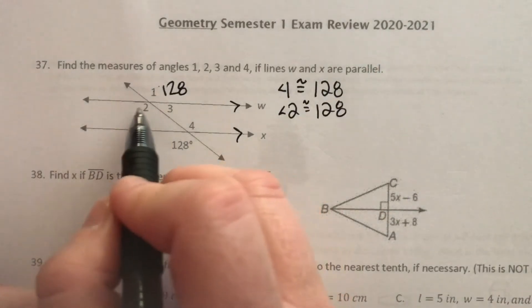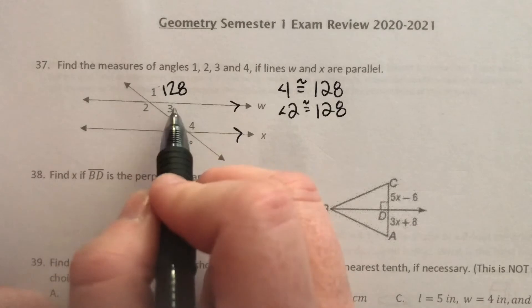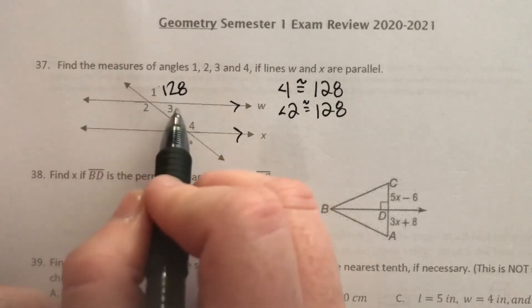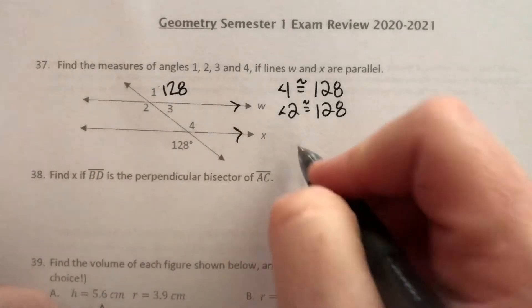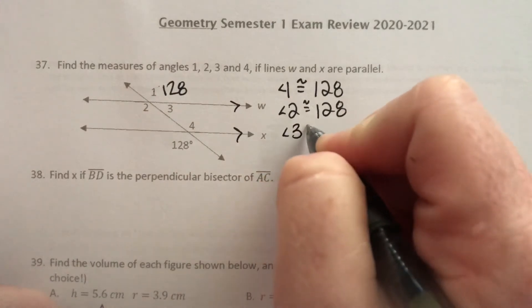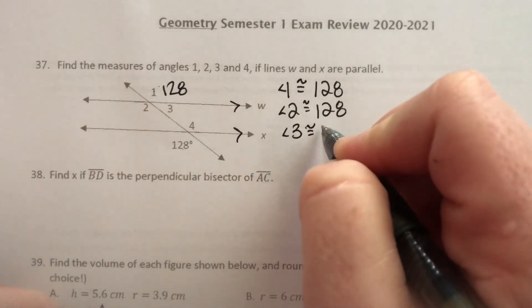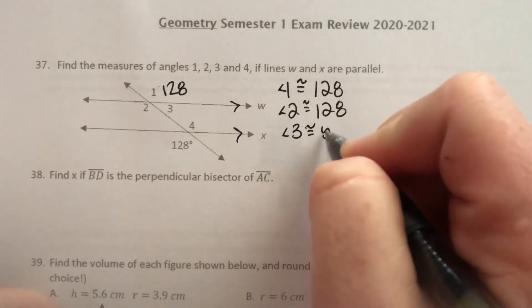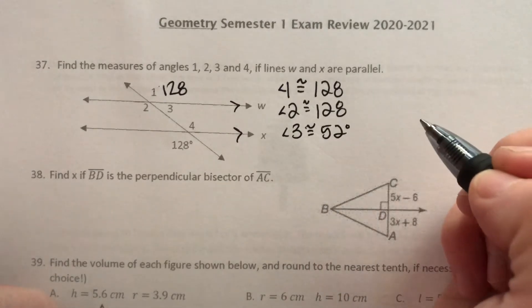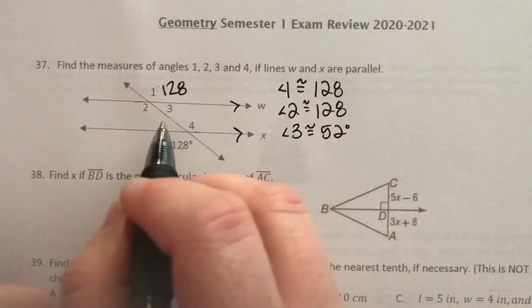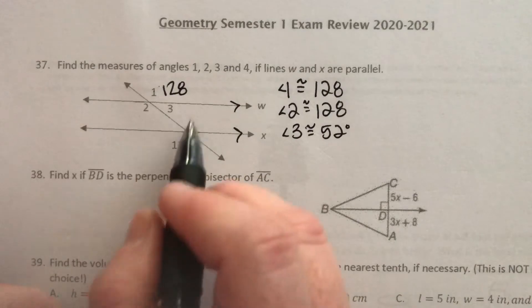Angle 3 is supplementary to both of these. So together, 128 and angle 3 are gonna add up to 180. So angle 3 has to be 42, no, 52. And then angle 4 is a vertical to 128.